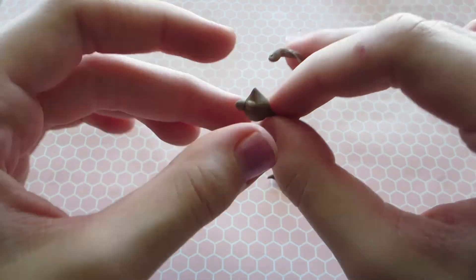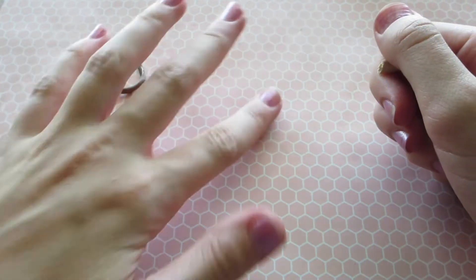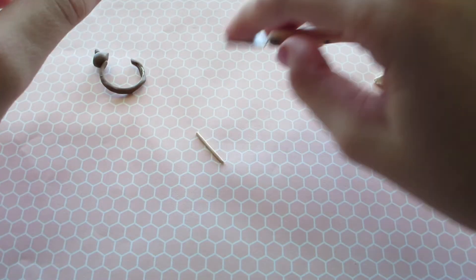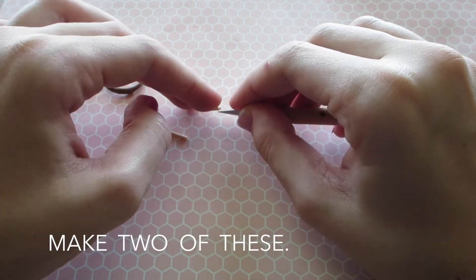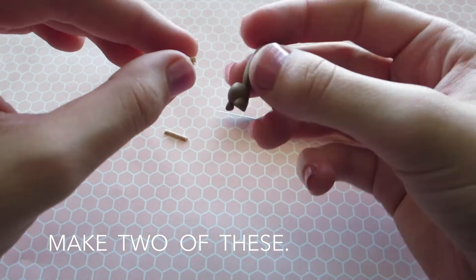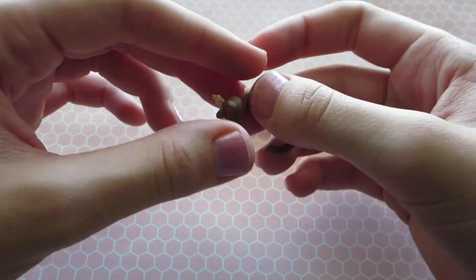To make the reindeer's antlers, take some tan polymer clay and cut two very tiny snakes. Attach them together and then attach to the head.